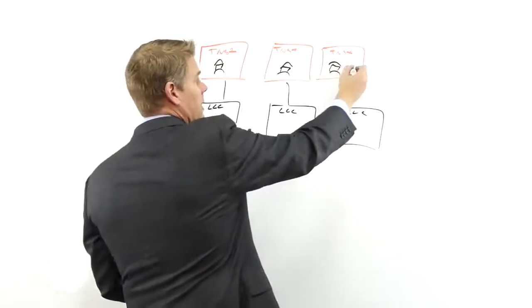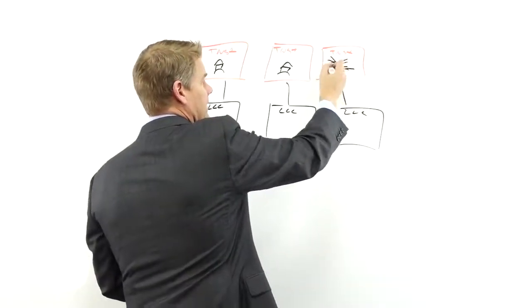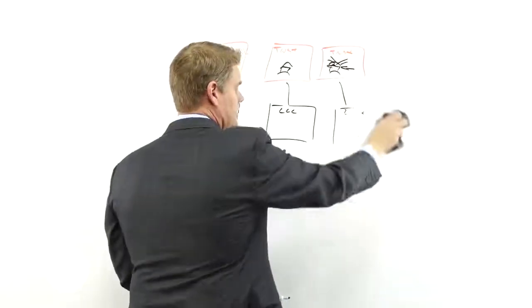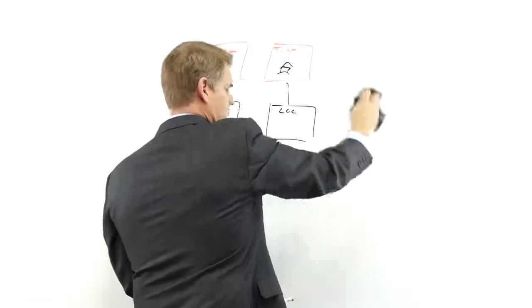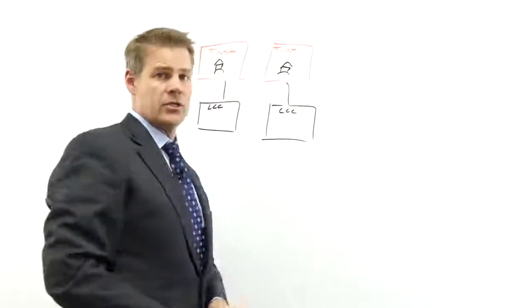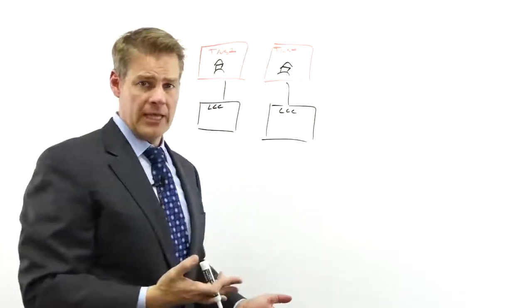But generally speaking, we're going to create a structure like this. So if anything happens, let's say if this property right here comes under attack, then the only thing you're risking is this one LLC together with this one property. So we've segregated our assets to the maximum ability with this type of planning.